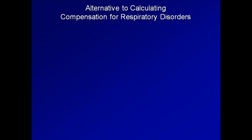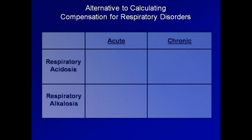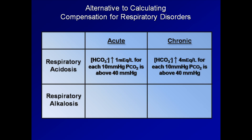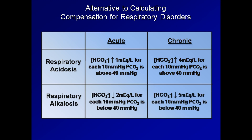There are some alternative approaches to calculating compensation. Here is one alternative for respiratory disorders. For acute respiratory acidosis: bicarb should increase 1 mEq/L for each 10 mmHg the pCO2 is above 40. For chronic respiratory acidosis: bicarb should increase 4 for each 10 the pCO2 is above 40. For acute respiratory alkalosis: bicarb should decrease 2 for each 10 the pCO2 is below 40. For chronic respiratory alkalosis: bicarb should decrease 5 for each 10 the pCO2 is below 40. These shortcuts are mathematically equivalent to the previous equations but easier to remember.